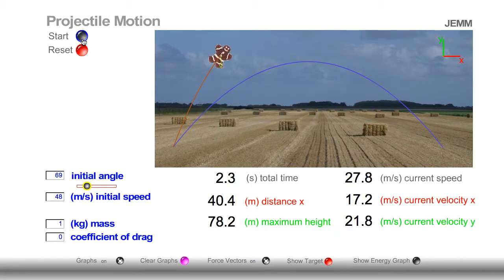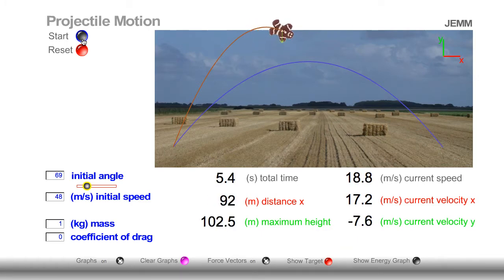At a different angle, notice the current velocity in the X direction has changed, but throughout the journey, it remains constant. This time, the current velocity in the X direction was only 17.2 meters per second, and that number did not change. So I want you to keep that in mind.